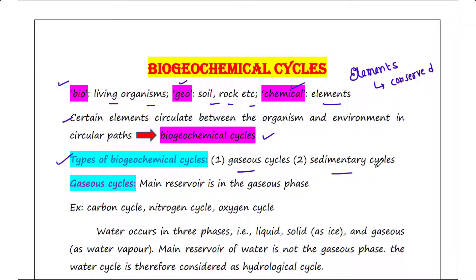What is gaseous cycles? The cycles of carbon, nitrogen, and oxygen are classified under gaseous cycles since these elements have a main reservoir in the gaseous phase.